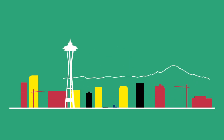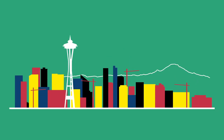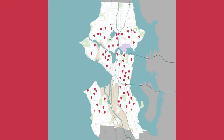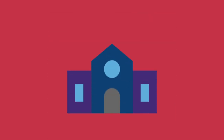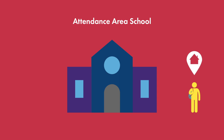As Seattle grows, so does enrollment in Seattle Public Schools. We welcome each and every student and have more than 100 schools located throughout the city. Most schools are attendance area schools, with students assigned based on their home address.